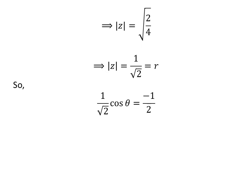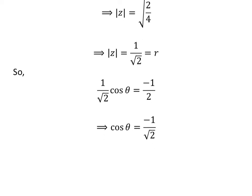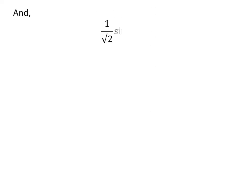Since r times cosine of theta is equal to minus half, we have 1 upon square root of 2 times cosine of theta is equal to minus half. Cancelling out the common factor gives us cosine of theta is equal to minus 1 upon square root of 2. Similarly, we get sine of theta is equal to 1 upon square root of 2.